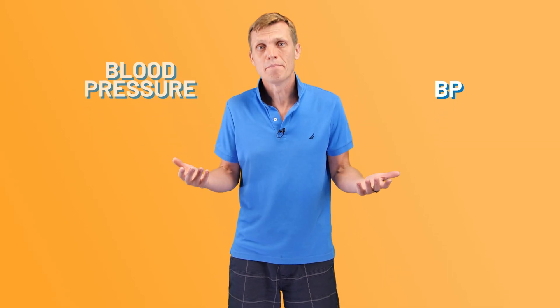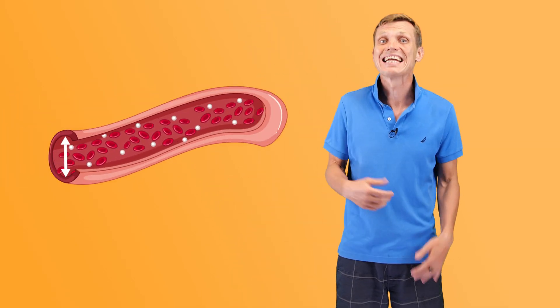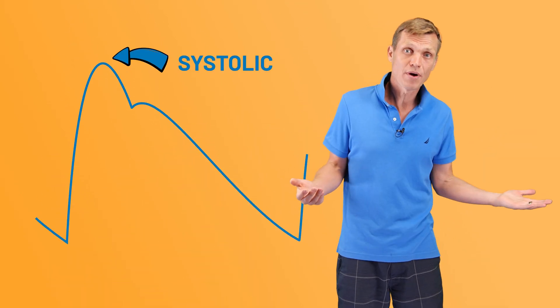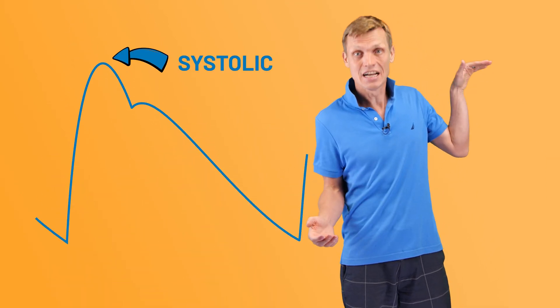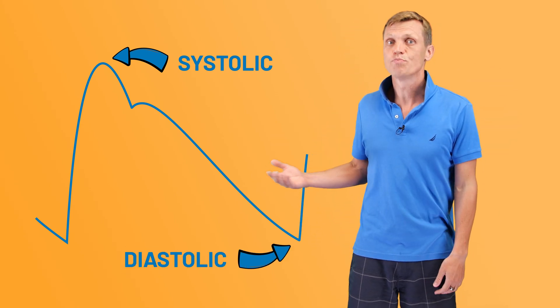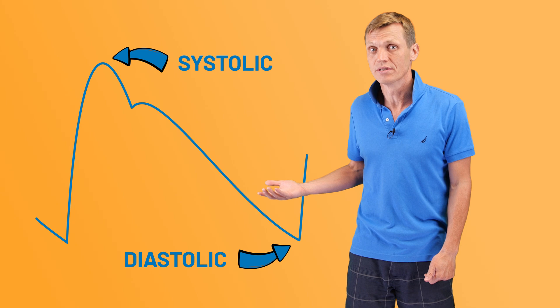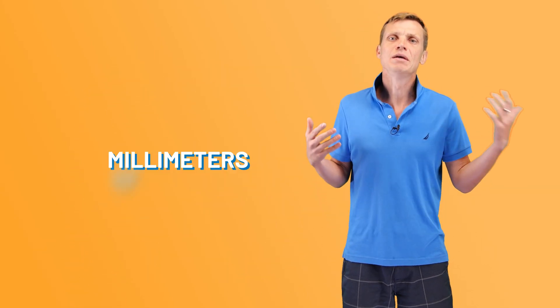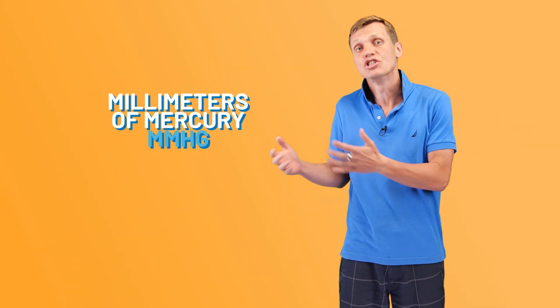Blood pressure, or simply BP, measures the force of circulating blood against the artery walls. Usually it expresses a ratio of systolic blood pressure, which measures BP at its highest point during heartbeats, and diastolic blood pressure, which measures BP at its lowest point between heartbeats. And it measures in millimeters of mercury, or mmHg.